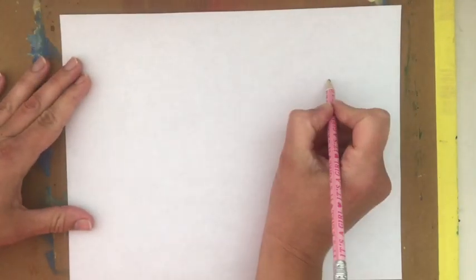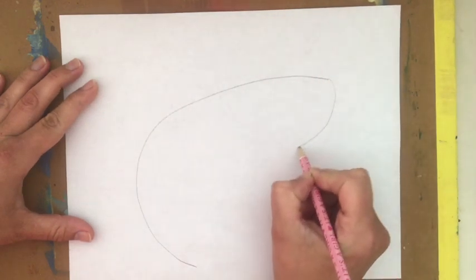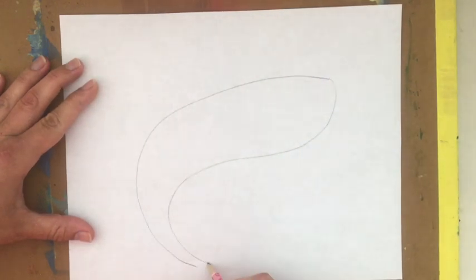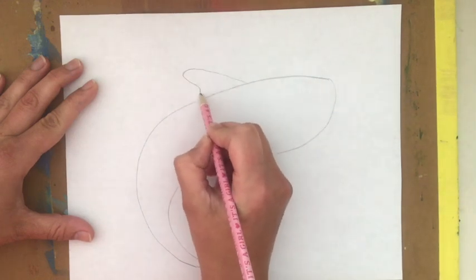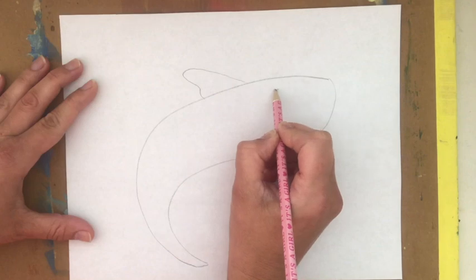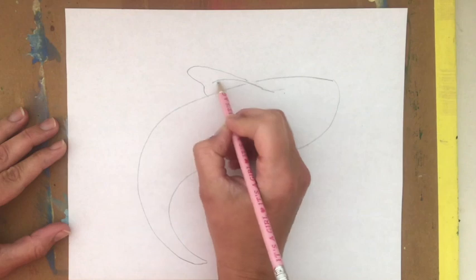Let's get started. Start with pencil that has an eraser. Make sure you draw lightly in case you need to erase. Draw lighter than what I'm doing in the video. Make sure you pause after each step to catch up. We're going to be drawing the body first and looking down on the shark as if we're snorkeling from above it. That first fin I drew is actually one of the fins that's on the side.